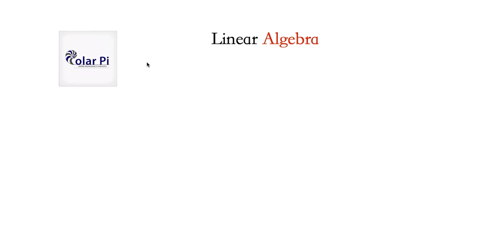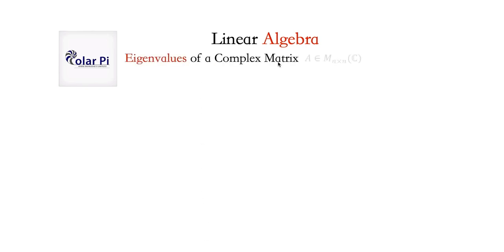Welcome. So in a previous video, I showed you how to find the eigenvalues for a 2x2 matrix and then a 3x3 matrix. Both of those examples had entries that were strictly real. But before we discuss the Gershgorin disk theorem in the next video, I realized it's important that we see an example on finding eigenvalues for a matrix with complex entries — and therefore this video: eigenvalues of a complex matrix.